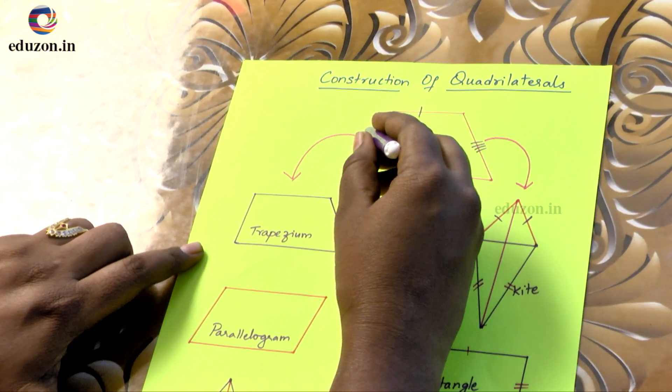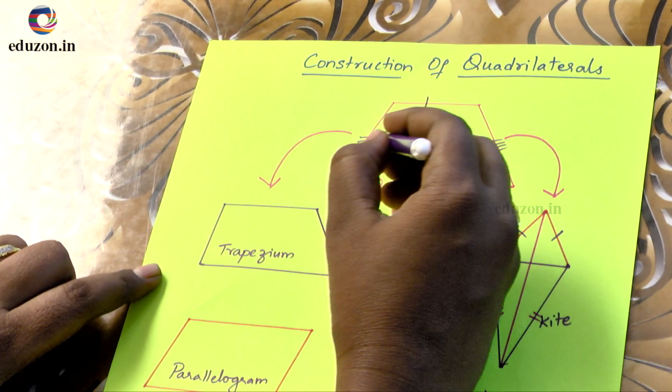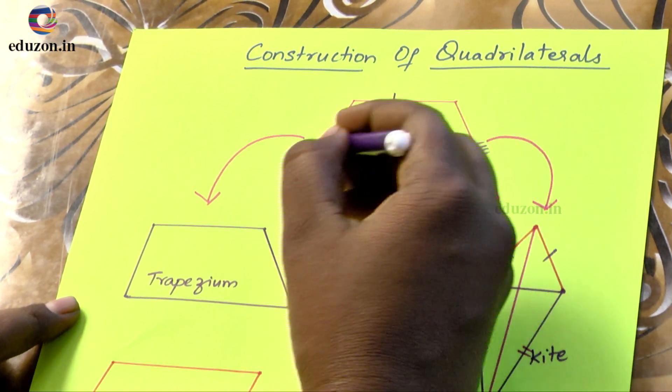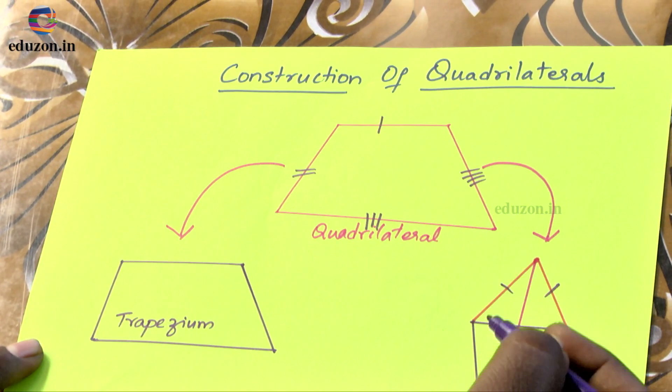Now quadrilaterals can be of different types. Based on its property, we can decide what is the name of the quadrilateral.